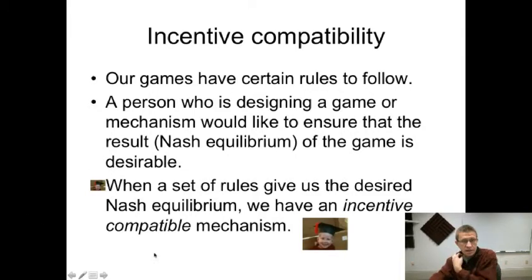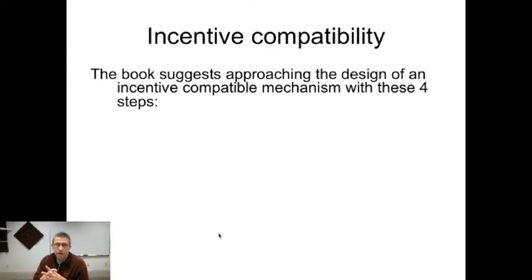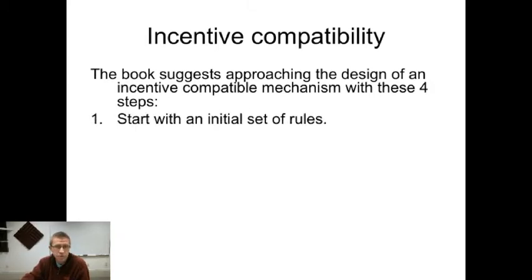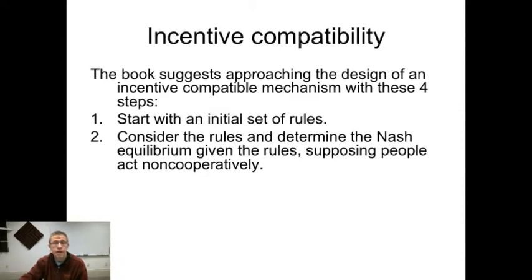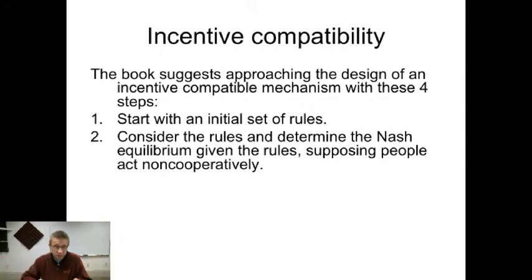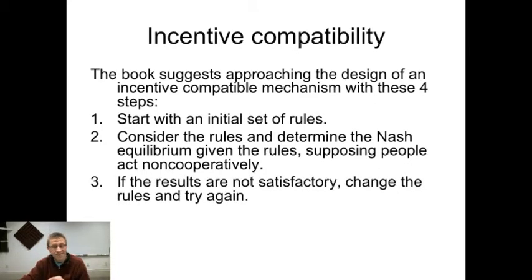Incentive compatibility is a concept that keeps coming up. The book suggests four steps for designing an incentive-compatible mechanism. First, start with an initial set of rules. If you're in a group and you want people to show up and spend an hour a week doing group work, you come up with some set of rules or bylaws. Then, determine the Nash equilibrium given those rules, supposing people act non-cooperatively — people are not doing this out of the goodness of their heart; they want to work as little as they can but still be part of the group.